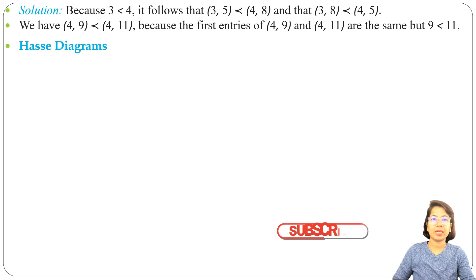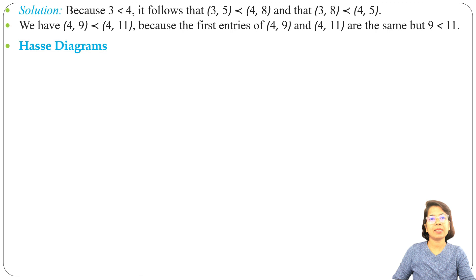In this lecture I will discuss Hasse diagrams. Relations can be represented in two ways: one is a 0-1 matrix, another is a digraph. A Hasse diagram is a special type of diagram. I will explain Hasse diagrams through an example.